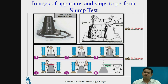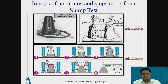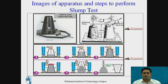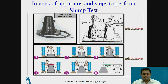The procedure for the slump test is as follows. First, clean the inner surface of the cone and apply oil. Fill the cone with concrete in layers, giving 25 blows or strokes per layer. After filling, level the concrete at the top of the cone and remove excess concrete using the tamping rod. Also clean any concrete on the base plate.